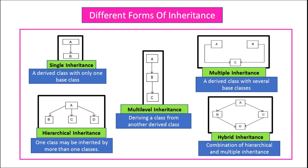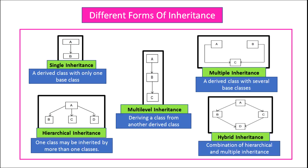In multi-level inheritance, a class is derived from another derived class — that is, one which is already derived from another base class. We can see in this example, class A is the base class for class B. Class B is derived from A and it is acting as a base class for another class C. That is, class C is the child class and B is the base class for class C.